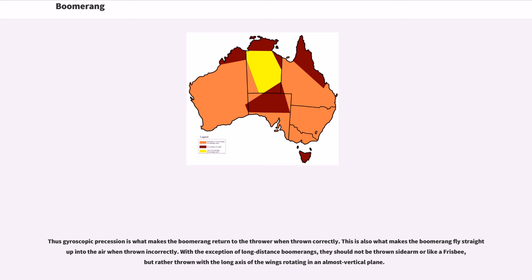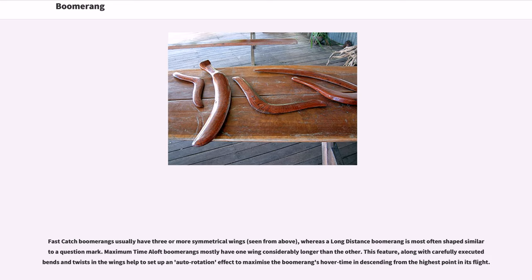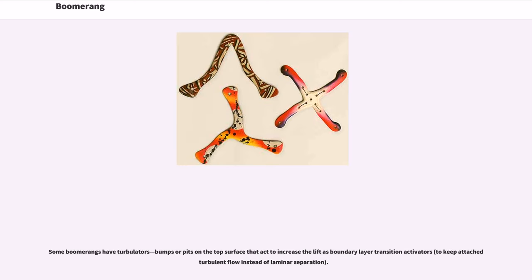With the exception of long-distance boomerangs, they should not be thrown sidearm or like a frisbee, but rather thrown with the long axis of the wings rotating in an almost vertical plane. Fast catch boomerangs usually have three or more symmetrical wings, whereas a long-distance boomerang is most often shaped similar to a question mark. Maximum time aloft boomerangs mostly have one wing considerably longer than the other, and carefully executed bends and twists in the wings help set up an auto-rotation effect to maximize hover time. Some boomerangs have turbulators — bumps or pits on the top surface — that act to increase lift as boundary layer transition activators, keeping attached turbulent flow instead of laminar separation.